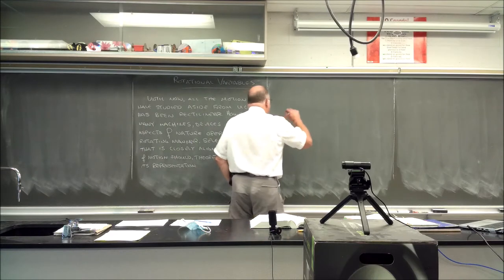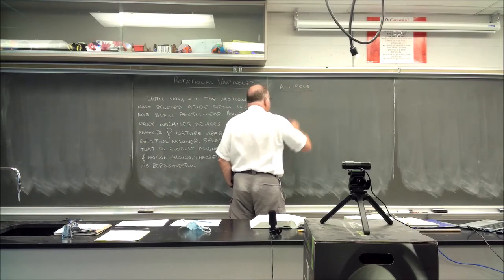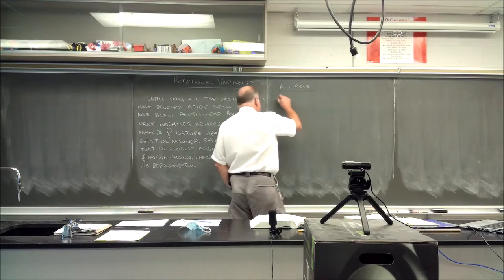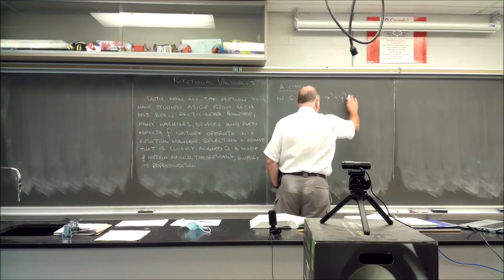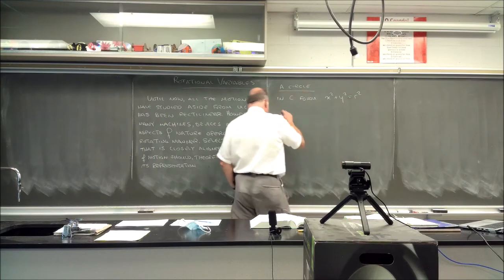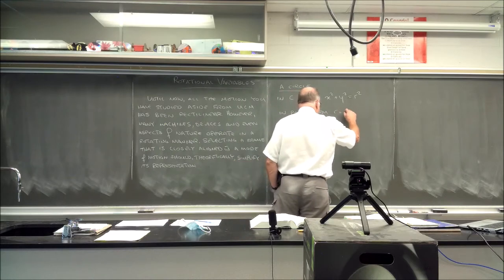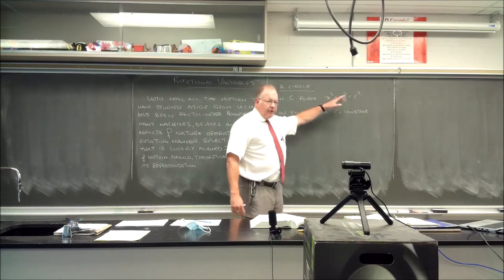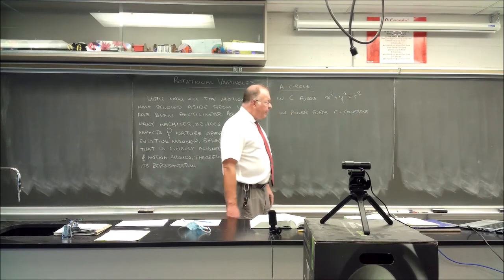Let's consider a circle placed at the origin. In Cartesian form we have x² + y² = r². In polar form it is simply r equals a constant. You go from an equation with squares and potential square roots to just r = constant — you can't get any simpler than that.